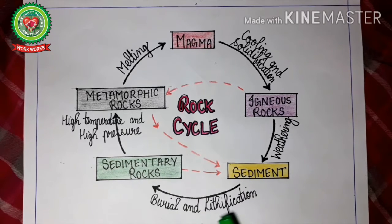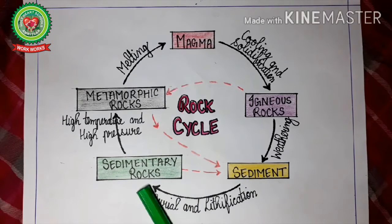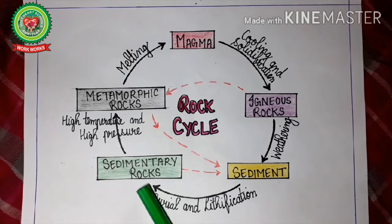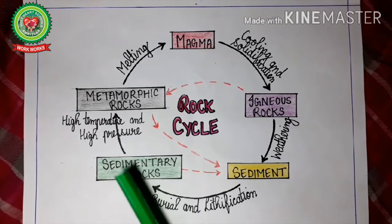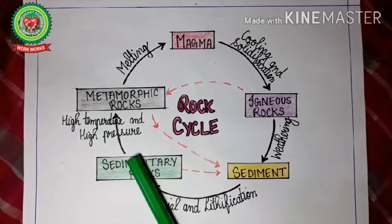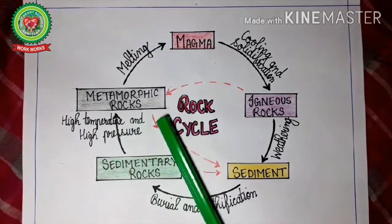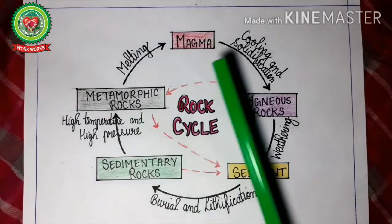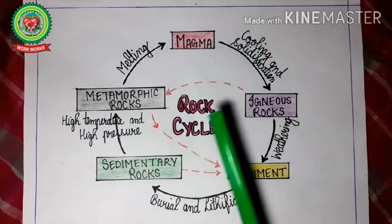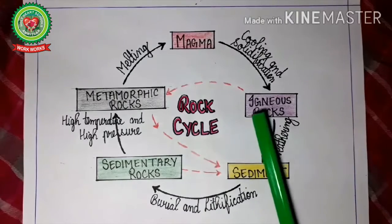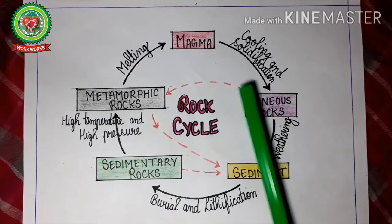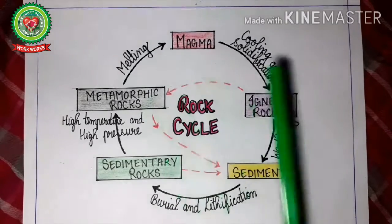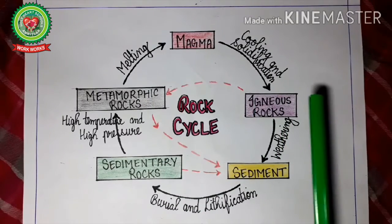Sediment, after burial and lithification — that is after hardening — becomes sedimentary rocks. Sedimentary rocks, when put under high temperature and high pressure inside the earth, change into metamorphic rocks. Metamorphic rocks on melting again change into magma. Igneous rocks can also change into metamorphic rocks due to high temperature and high pressure inside the earth.